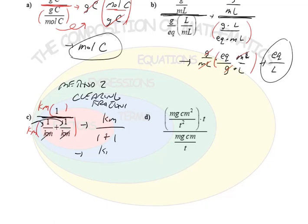So again, if I clear fractions, I'm going to end up with kilometers or km all over two, which simplifies really nicely. Now again, we can use method one also, but we're going to clear fractions in that one. So in D,